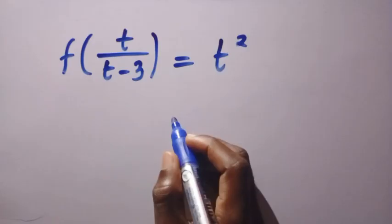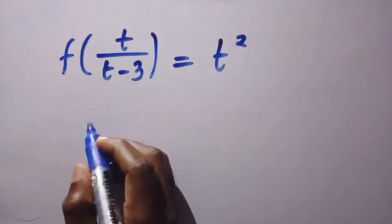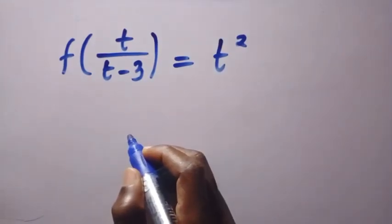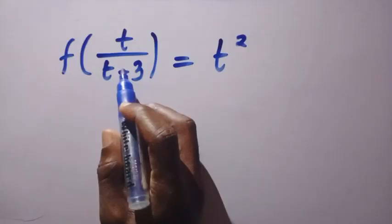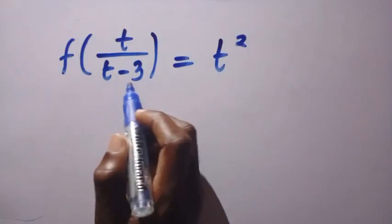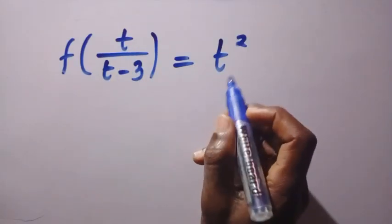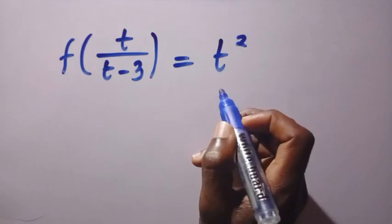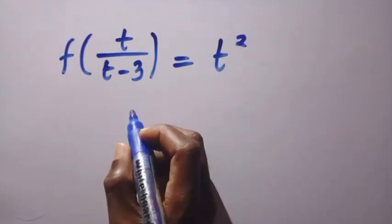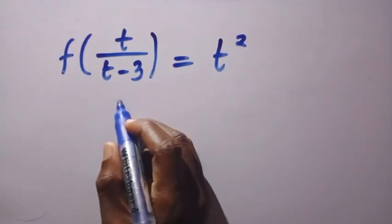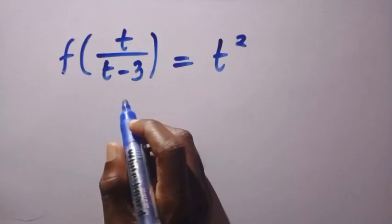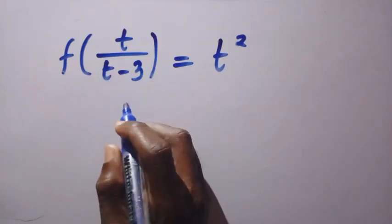Here we have a nice functional equation which we are interested to find f of t minus 1, given that f of t divided by t minus 3 equals t to the power of 2. The first time I saw this question, I just wanted to share it with you and how to solve it step by step.